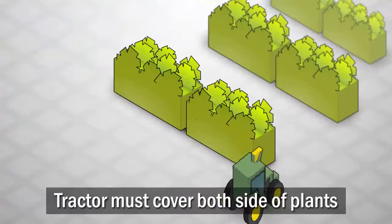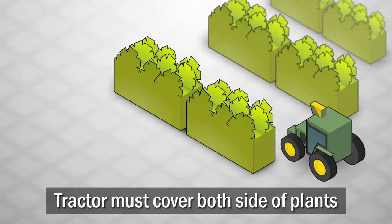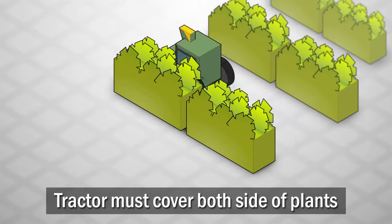The tractor must traverse the entire orchard, making sure to cover both sides of each tree for tasks such as inspection and spraying.